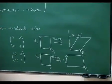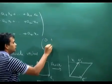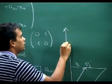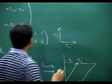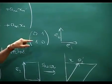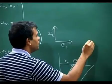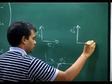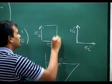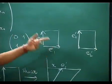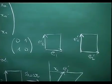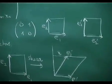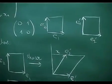Let us look at a third matrix, my favourite. It takes e1 to e2 and e2 to e1. So it looks like nothing much is really happening in terms of pictures but the labels are changing. This picture is still a square but the labels of the edges have changed.